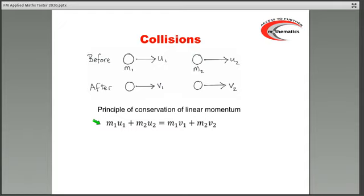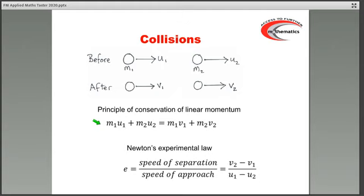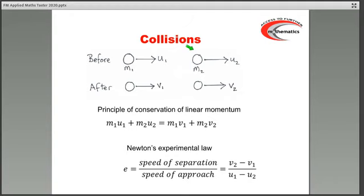The first equation comes from the principle of conservation of linear momentum. The total linear momentum before the collision is equal to the momentum afterwards. Momentum is just mass multiplied by velocity. Before the collision, this one has a mass of M1 and a velocity of U1, so the momentum is M1 × U1. And this one, before the collision, momentum is M2 × U2. So the total momentum, we just add them. That must equal the total momentum afterwards: M1 × V1 plus M2 × V2. That gives us one equation — the principle of conservation of linear momentum. The speed of approach is U1 minus U2.